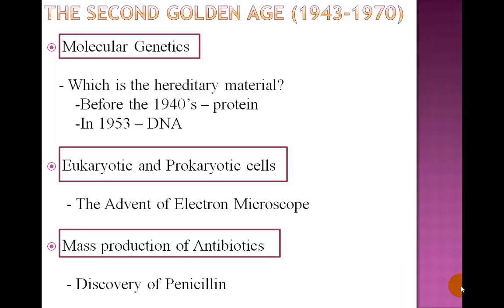With the advent of the electron microscope during this Second Golden Age, two cell types — eukaryotic and prokaryotic — were identified. Also, after the discovery of penicillin by Fleming and of other antibiotics by other scientists, there was a mass production of antibiotics needed for those wounded during World War II. Let's look at each one of these events in detail.